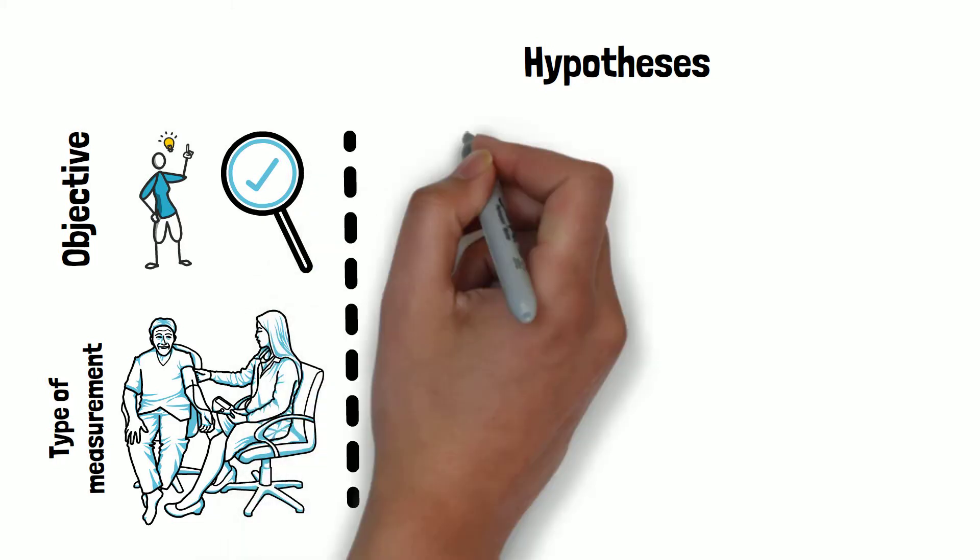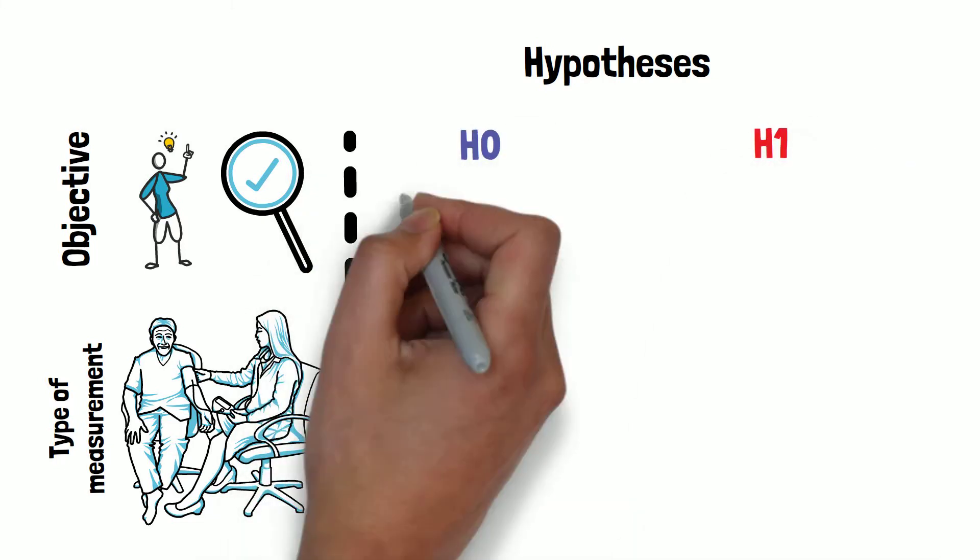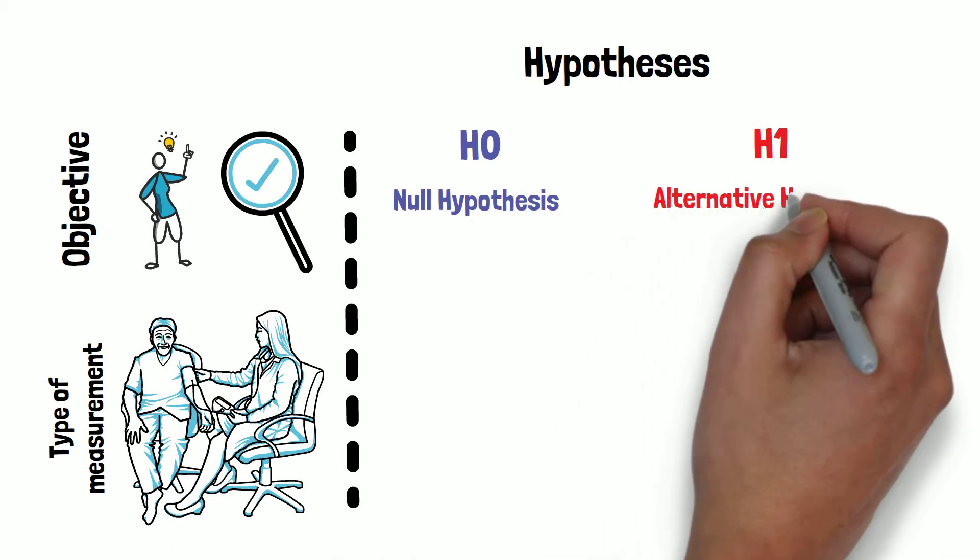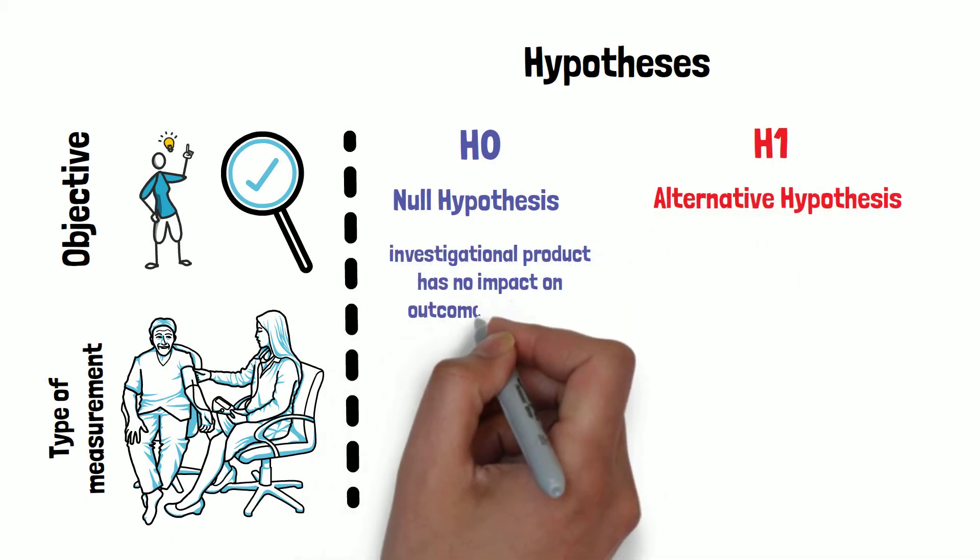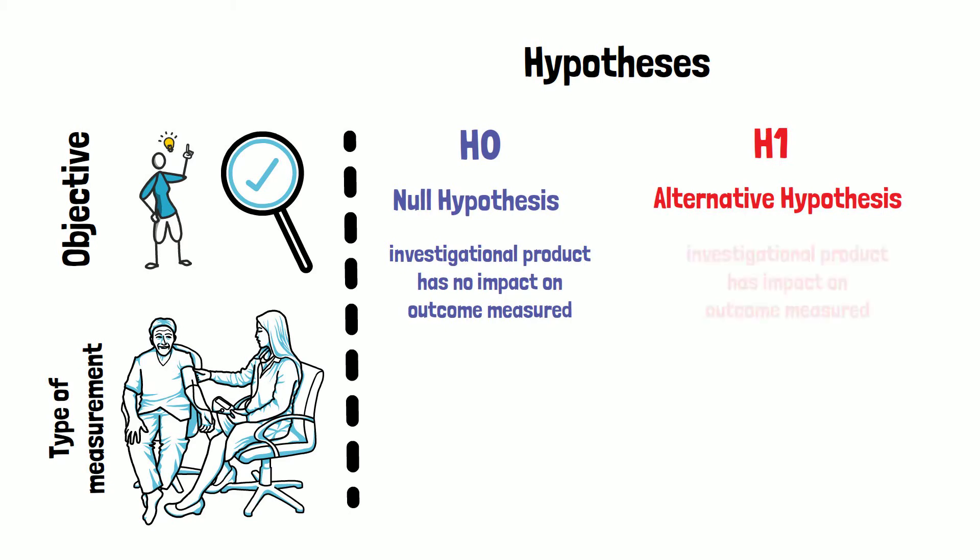Hypotheses always come in pairs, called the null hypothesis and the alternative hypothesis. The null hypothesis describes a non-favorable scenario where an investigational product would have no impact on the outcome measured. The aim of the trial is therefore to provide evidence that this hypothesis is not true.